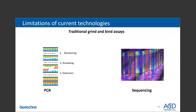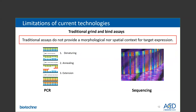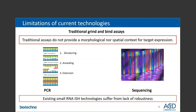Historically, detecting small RNAs has relied heavily on qPCR, small RNA sequencing, and microarray approaches. While these methods deliver bulk expression levels, they do not provide detailed spatial information for gene expression. Additionally, existing small RNA ISH technologies suffer from poor reproducibility and sensitivity, and they require extensive optimization, therefore consuming a substantial quantity of specimen sample. This emphasizes the need for a technology that can reliably detect cell-type-specific small RNA species in tissue while maintaining high detection sensitivity and specificity.